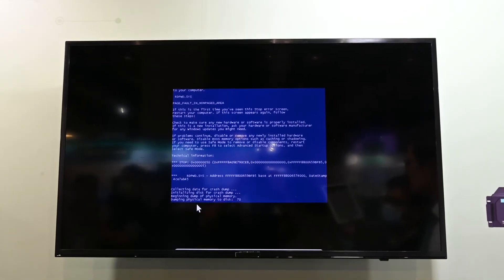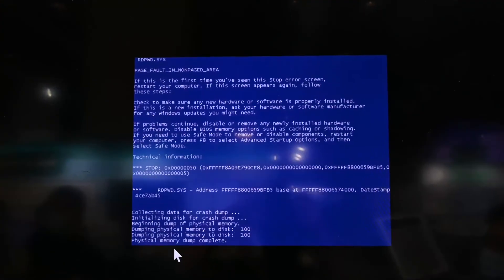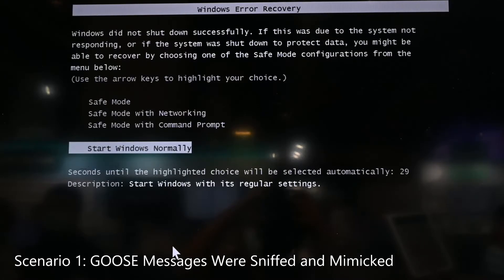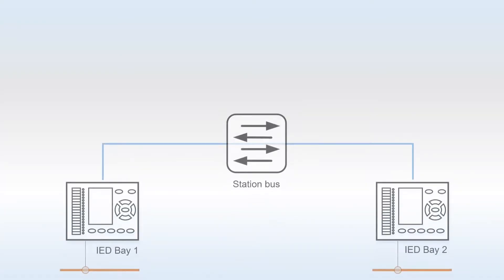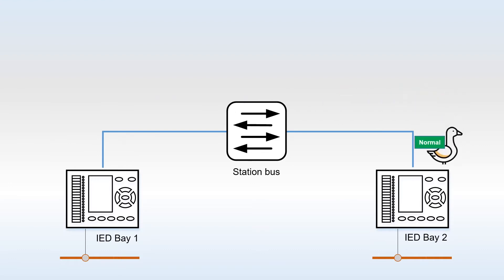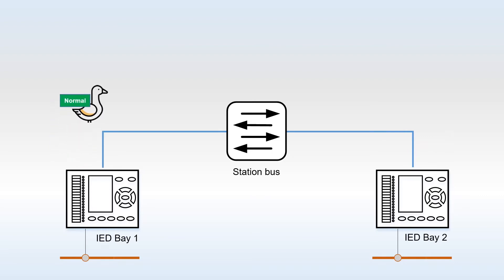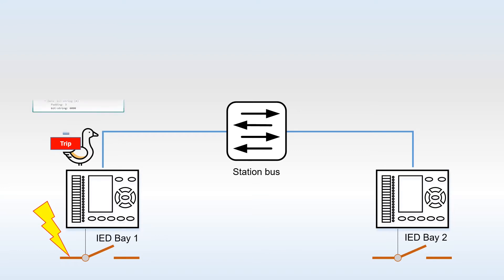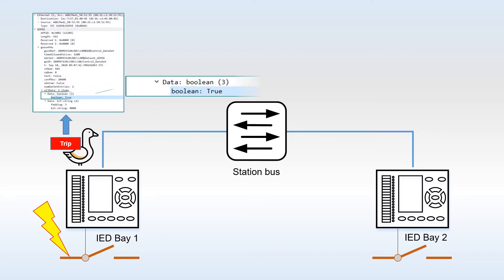These examples showed serious impacts. Let's take a deep dive into what exactly happened and how we can prevent it. In the first scenario, I exploited the IED-to-IED communication protocol called GOOSE. It is used for one IED to report its status to another IED, so protection functionality can span across different areas of the substation. If there's a failure in one bay, the other bay's protection should react accordingly. GOOSE was originally designed unencrypted because of its time-critical nature.